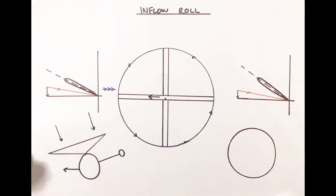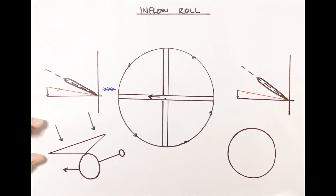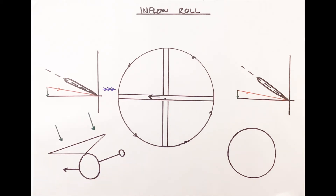As soon as we start moving we're going to start creating a relative airflow coming towards the disc. It's the way that horizontal incoming flow interacts with the current induced flow down through the disc that gives us inflow roll. The best way of looking at this is seeing the oncoming airflow generated by forward flight in a battle with the induced flow — the horizontal airflow wants to continue over the top of the disc and blow the induced flow away, while the induced flow is constantly trying to drag that horizontal airflow down through the disc.